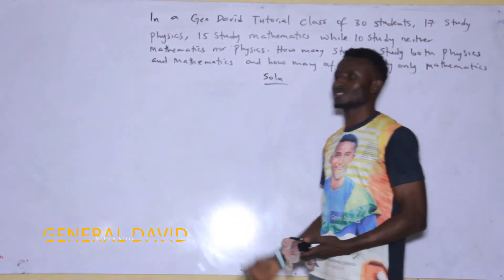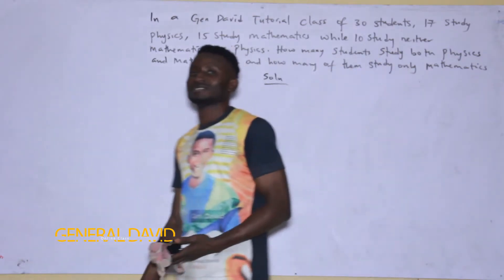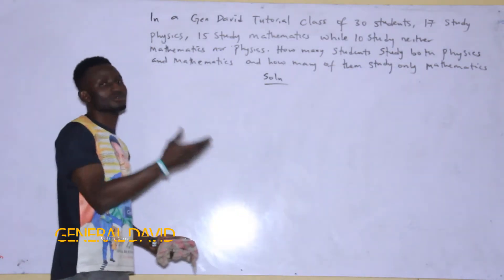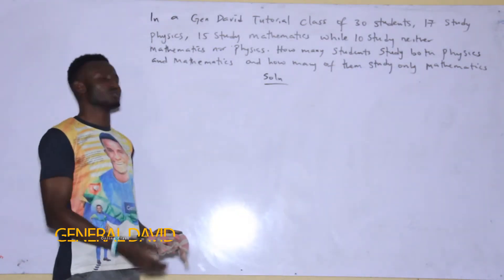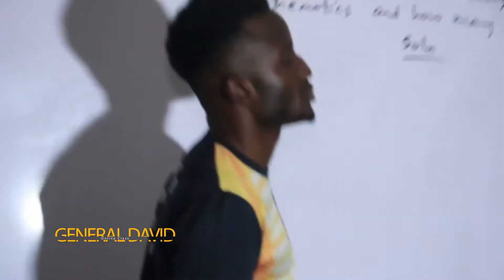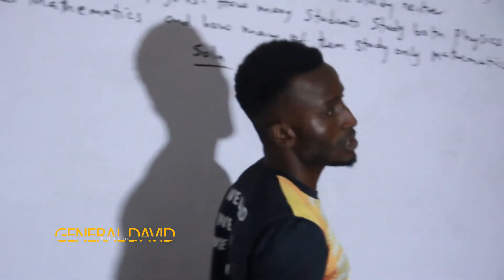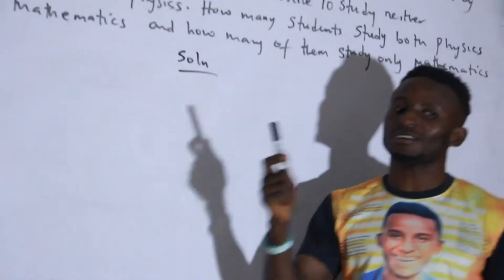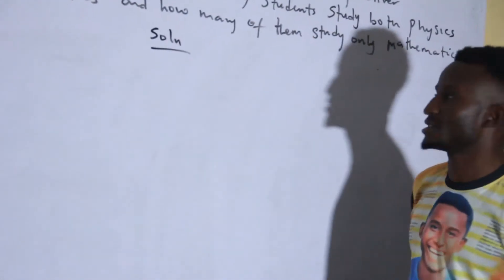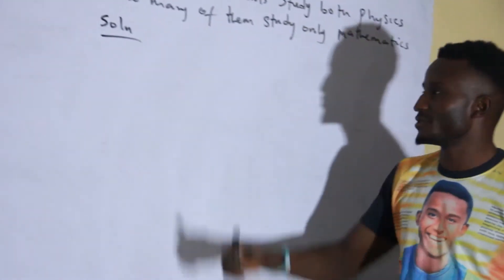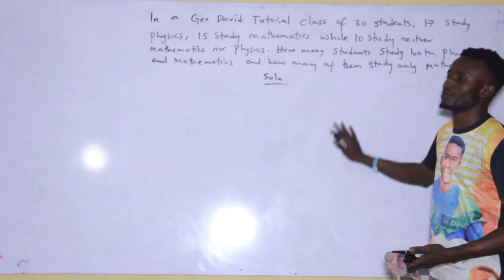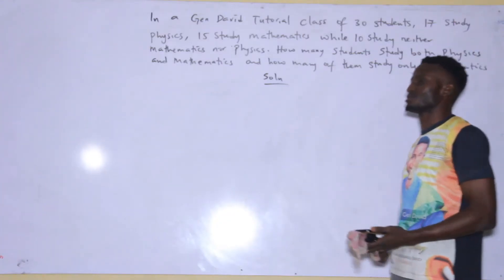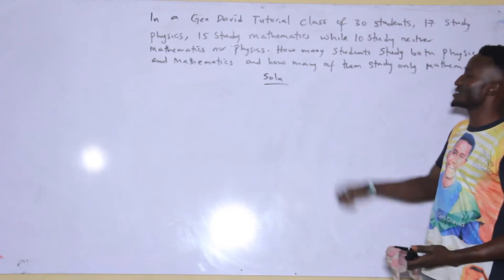Welcome to the shortcut class for the previous century Venn diagram questions. Now see this question. I will not be following the Venn diagram method I gave you the other time to solve this, but I will be giving a shortcut formula in order to solve this as soon as possible.